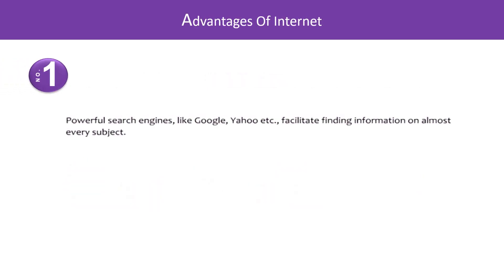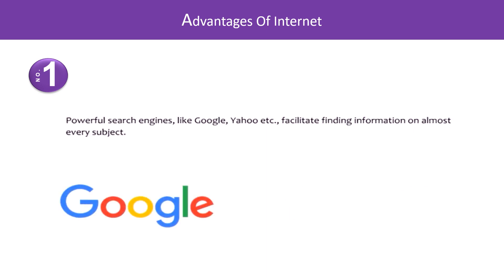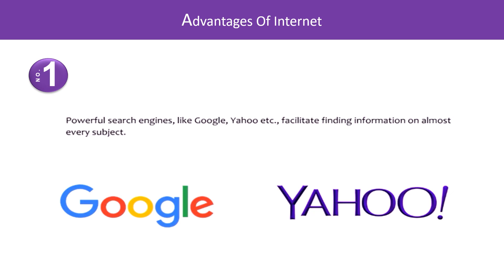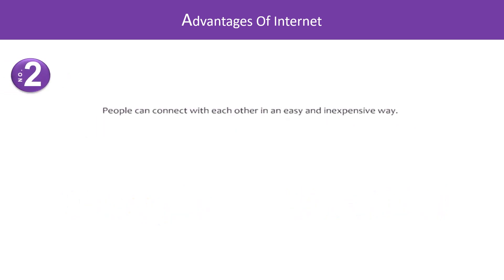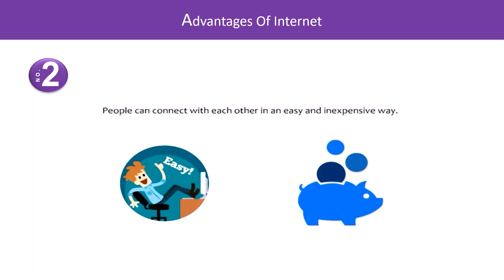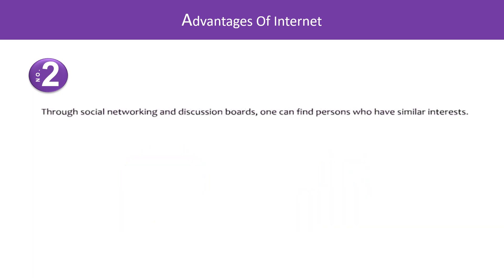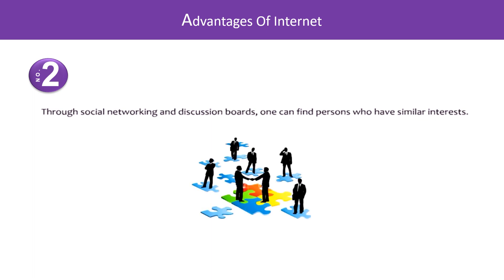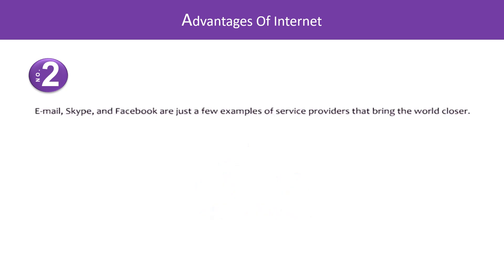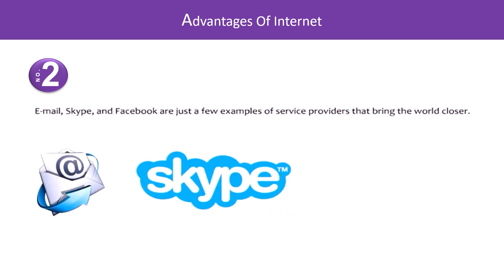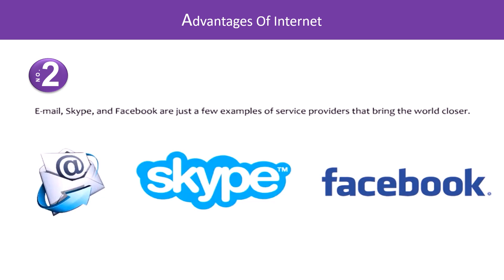Advantages of the internet. Number one: Powerful search engines like Google and Yahoo facilitate finding information on almost every subject. Number two: People can connect with each other in an easy and inexpensive way. Through social networking and discussion boards, one can find persons who have similar interests. Email, Skype, and Facebook are just a few examples of service providers that bring the world closer.